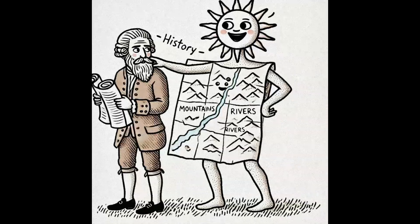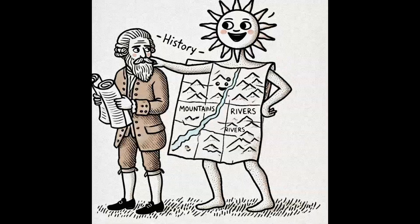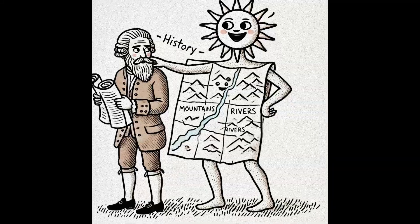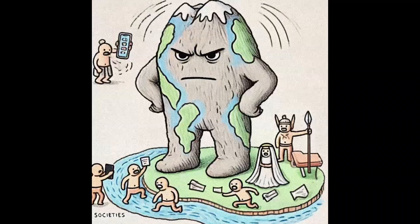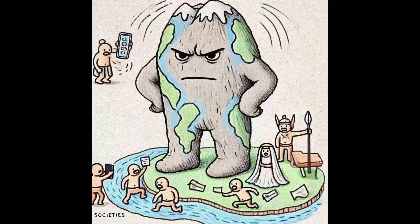While humans boast about conquering nature, we often overlook how persistently nature influences us. The geographic factor is like a silent partner in our history, constantly shaping and guiding human development. Environmental determinism argues that our cultures, our history, our everything is a tug of war between two forces — what people are made of and where they find themselves.